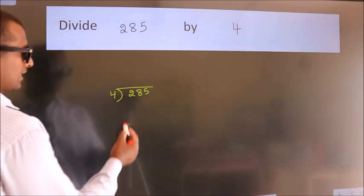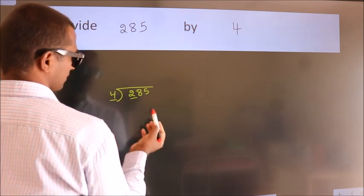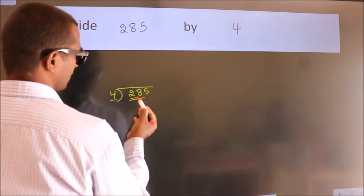Next, here we have 2. Here 4. 2 is smaller than 4, so we should take 2 numbers. 28.